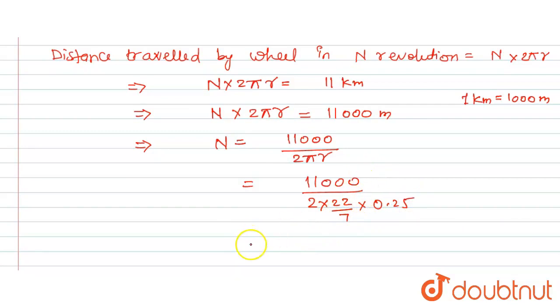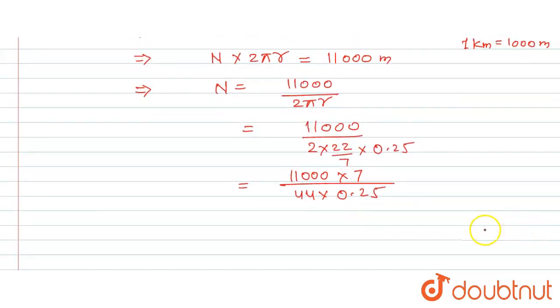So 7 goes to the numerator, so this will become 11,000 × 7 upon 44 × 0.25, okay? So further we will solve, then the total number of revolutions